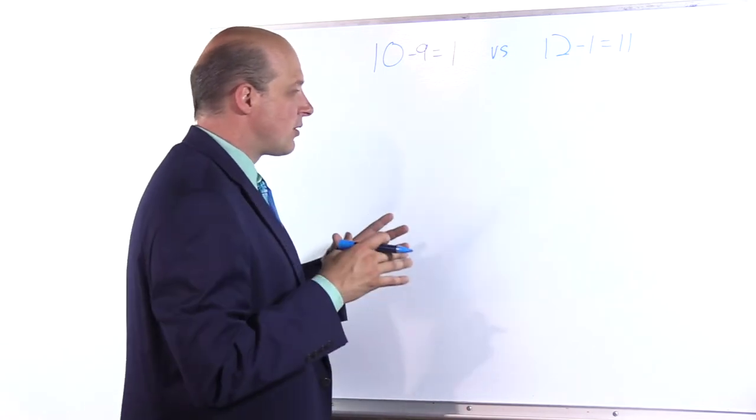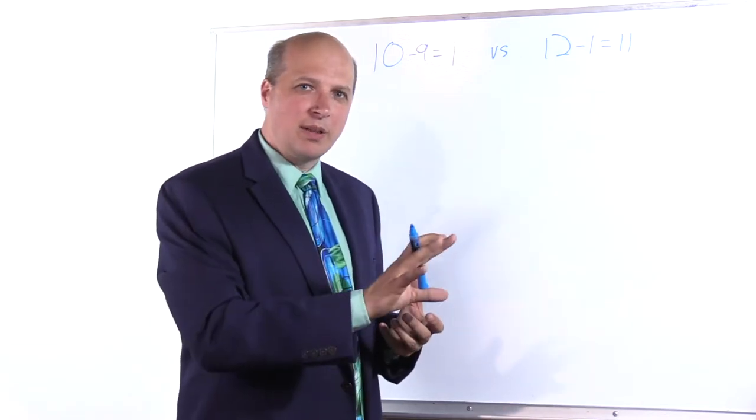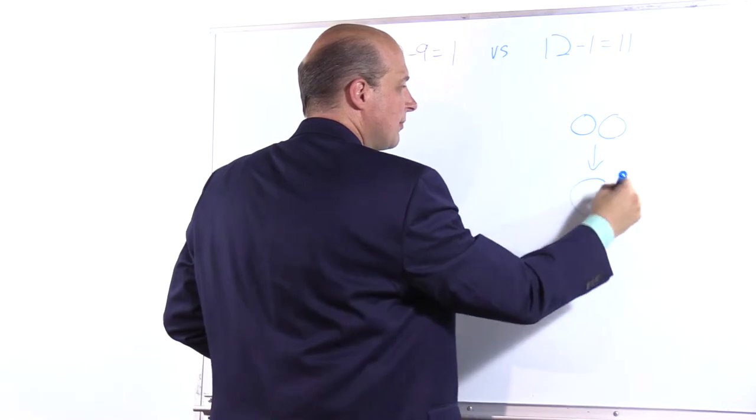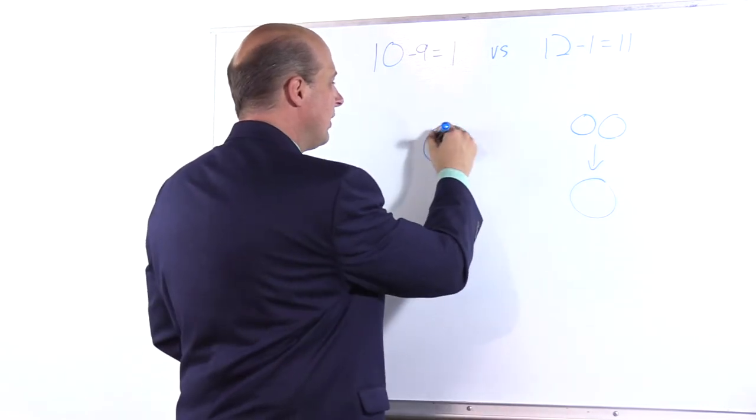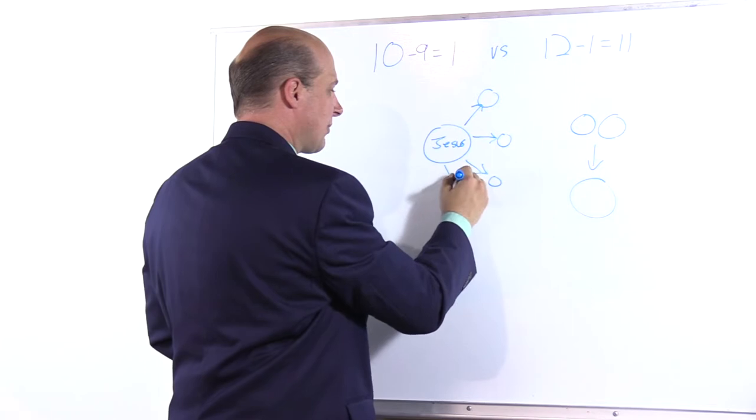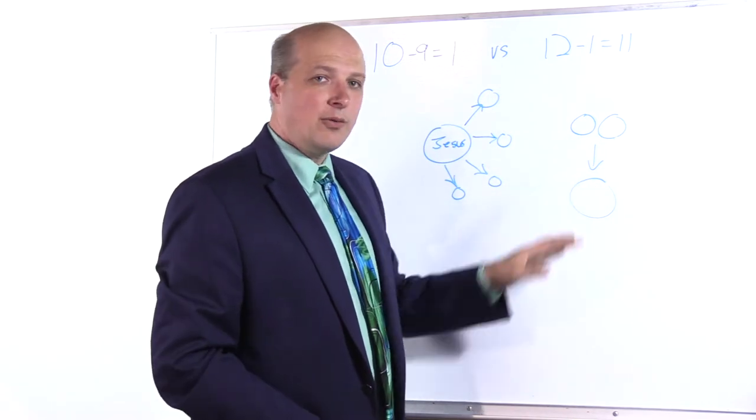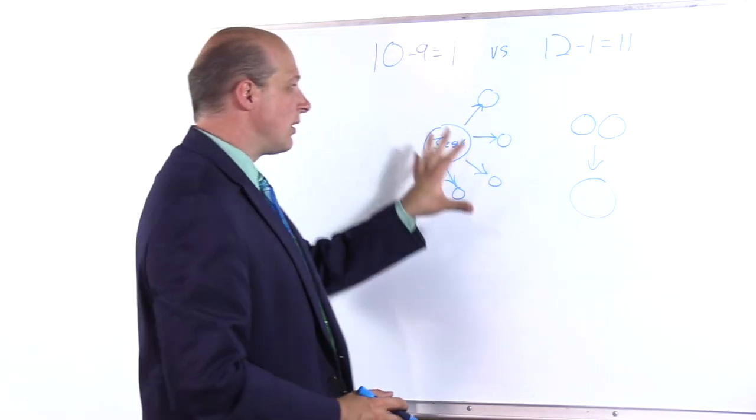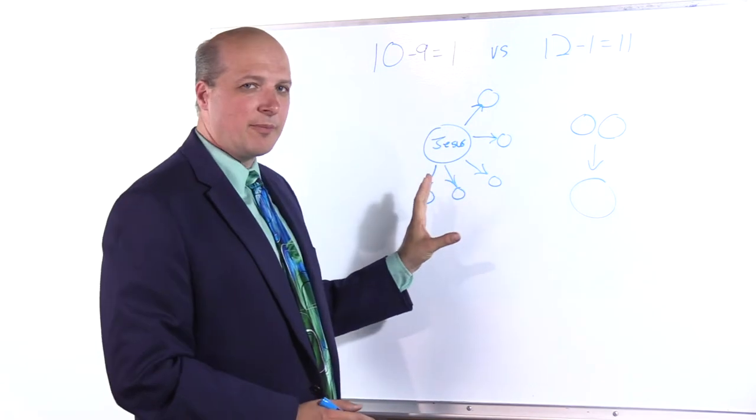Jesus did two different things here. He sent his disciples out to make disciples, and he told them to use a different pattern than what he apparently did. Jesus said for them to go out two by two and make disciples, find a person of peace. What Jesus himself did, though, we've got Jesus right here in the middle, and he has got several all the way around him that he is making disciples out. Yet Jesus is working with multiples at the same time, 12.